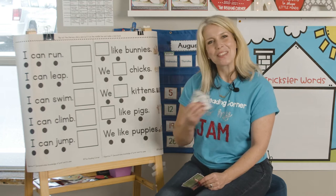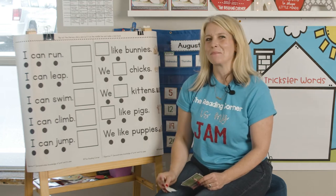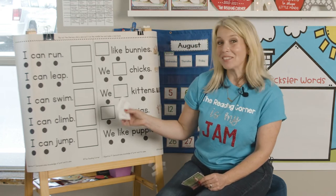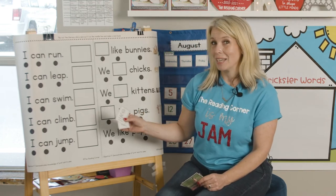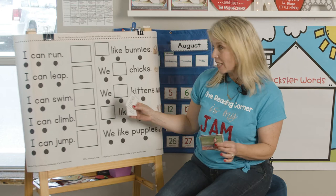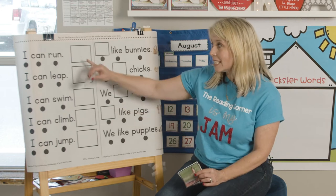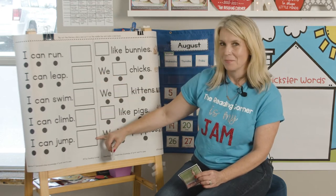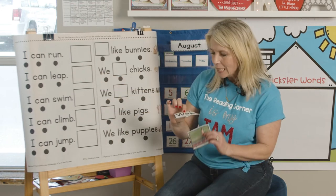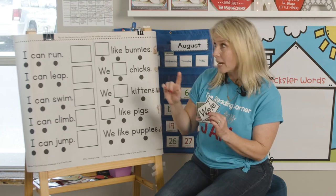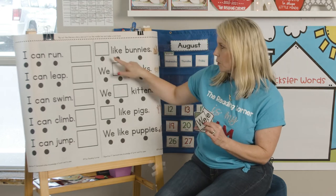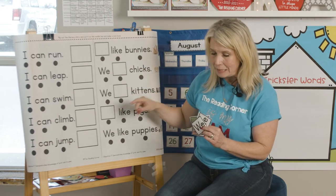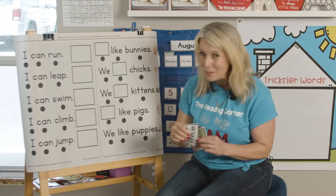Hi, this is Angie with Reading Corner Online. Today we're going to work on a literacy story, and for this activity you're going to need to cut out your picture cues. You're also going to need to cut out your sight words. We're going to fill in the missing blanks. Can you help me?